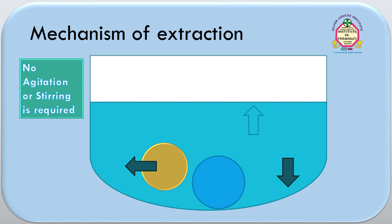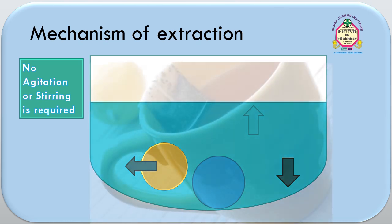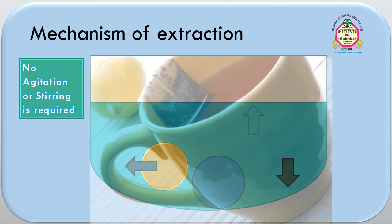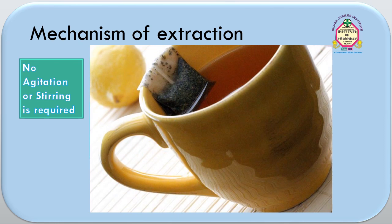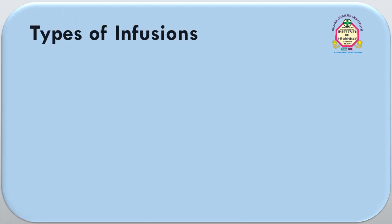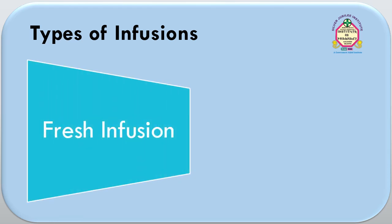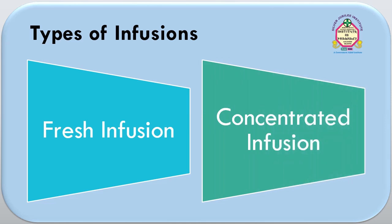The example of an infusion process is the preparation of tea by using a tea bag dipped into hot water. Now, we have to discuss the types of infusion. There are two types of infusion: fresh infusion and concentrated infusion. We will discuss them one by one.